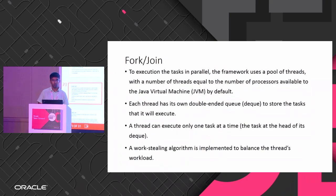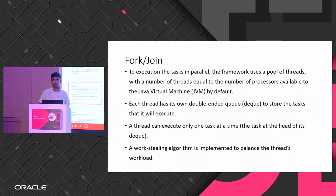How does Fork/Join work? It uses a thread pool. You can use your own factory or the common pool — a static method that creates a number of threads equal to the number of cores available. Each thread is given a double-ended queue.